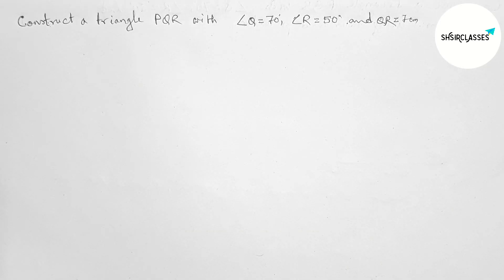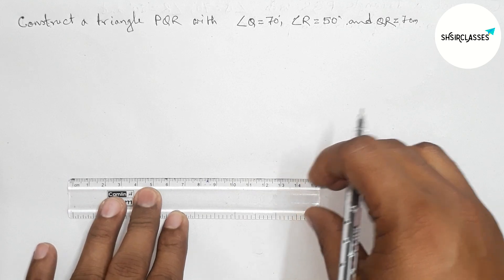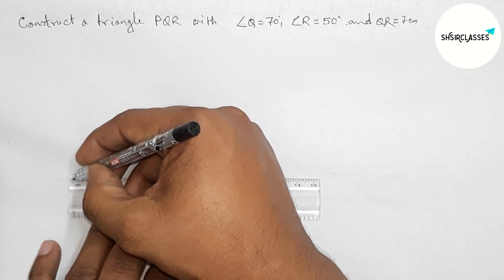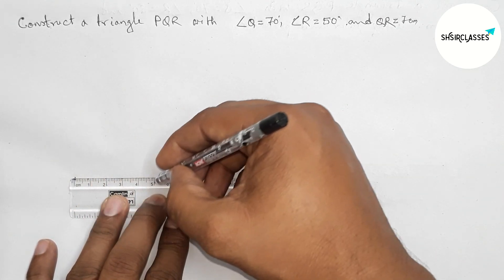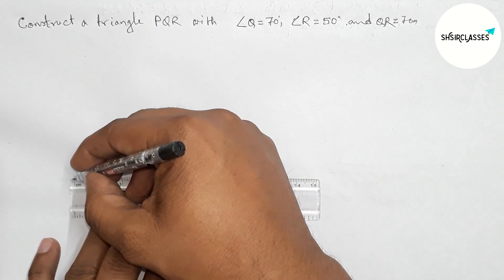First of all, let us draw here the given side QR equal to 7 centimeters. So this is a 7 centimeter line segment. Taking point here Q and here R, so QR is 7 centimeters.